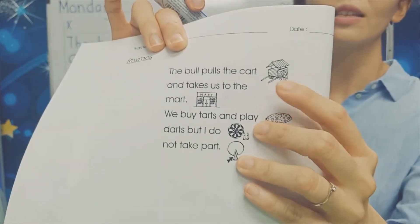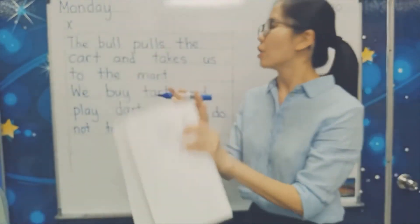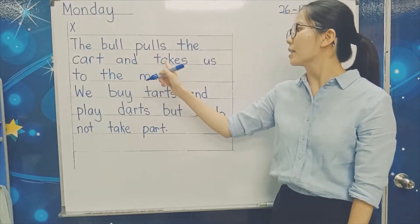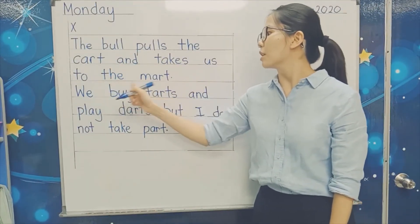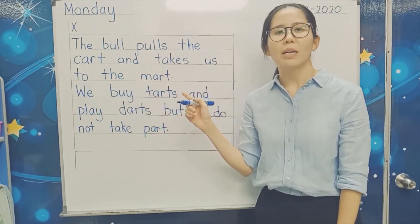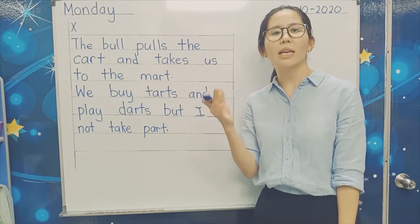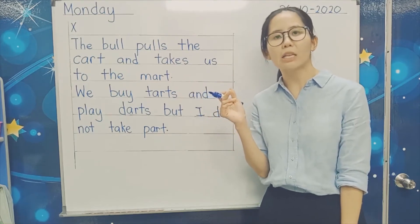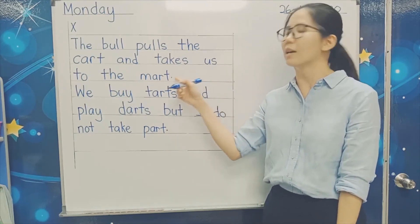So the bull, he pulls the cart. Can you see? This is a cart. So the bull pulls the cart, he takes us to the mart. The mart is like a shopping complex, but not a big one, a small one. Like you go to the 99 Speed Mart, you go to KK 7-Eleven, that's called a mart.